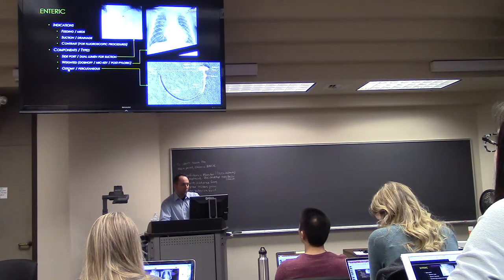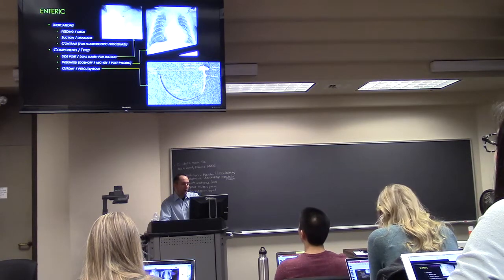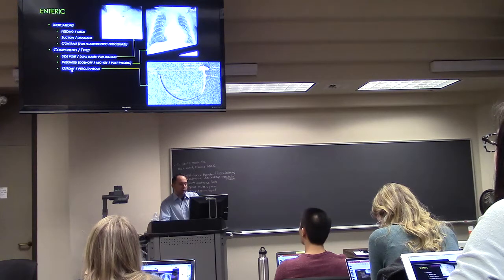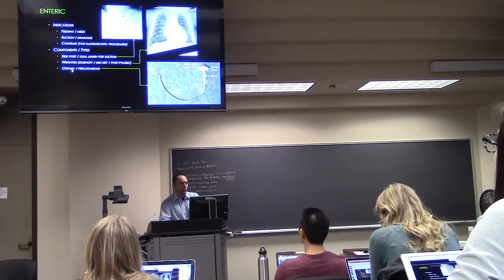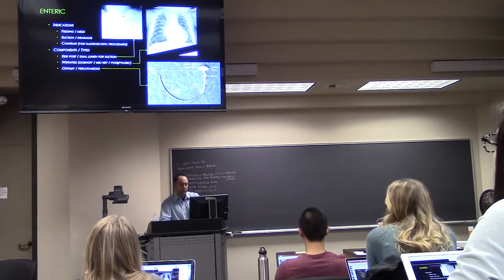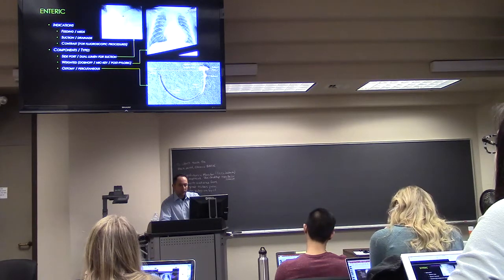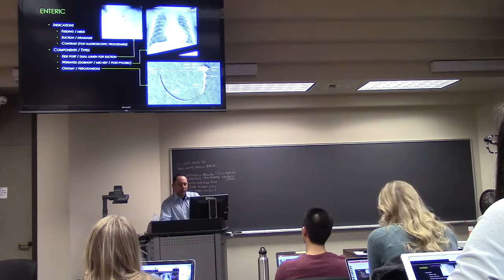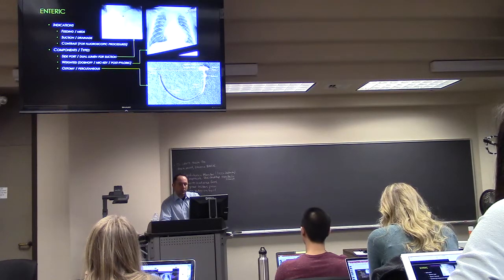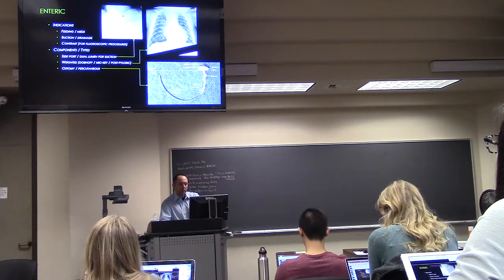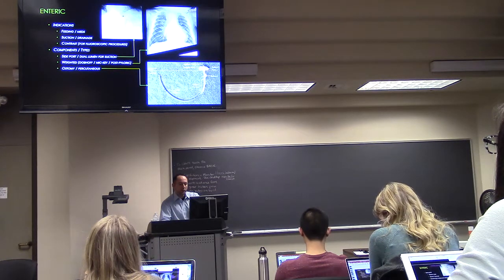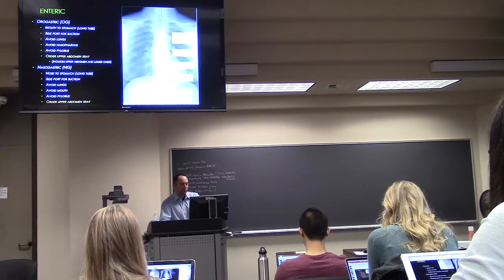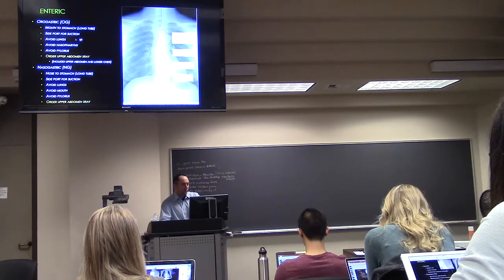If you have an ostomy like small bowel, you can catheterize that. You can use that as an enteric tube as well. This is a GJ tube. So this is like a PEG tube, except instead of being super short and stopping in the stomach, it goes post-pyloric into the jejunum. That's what a GJ tube is.